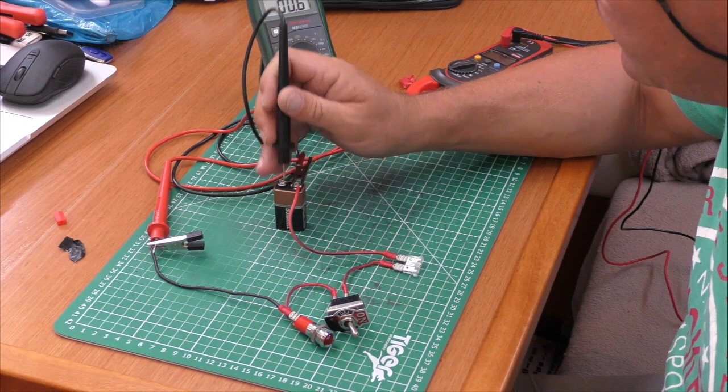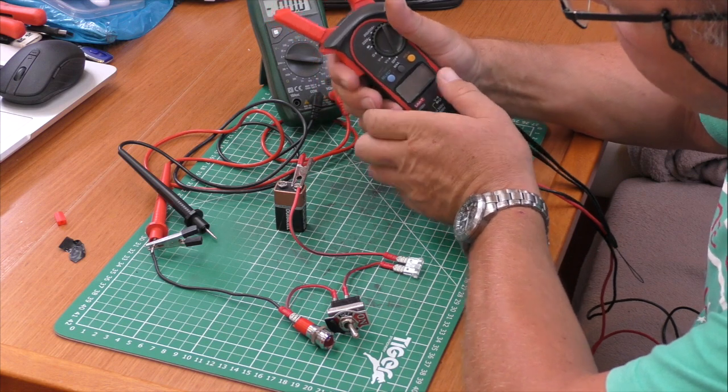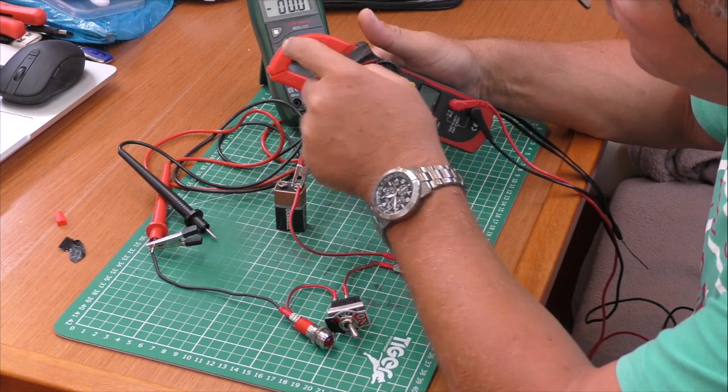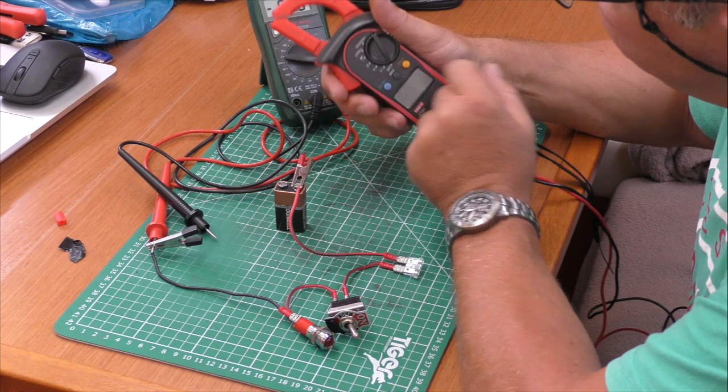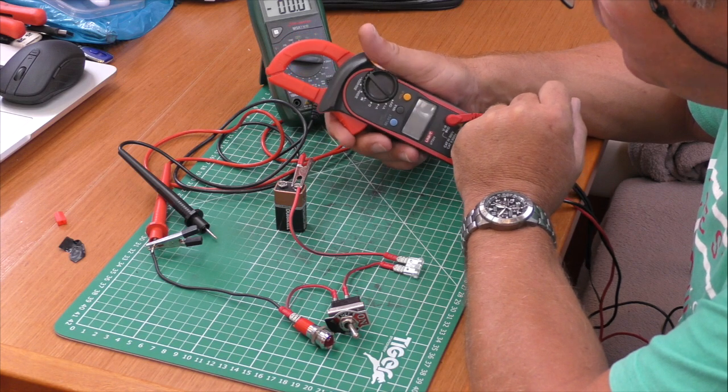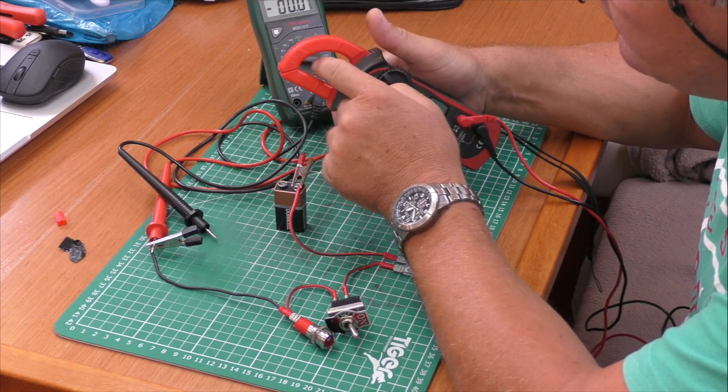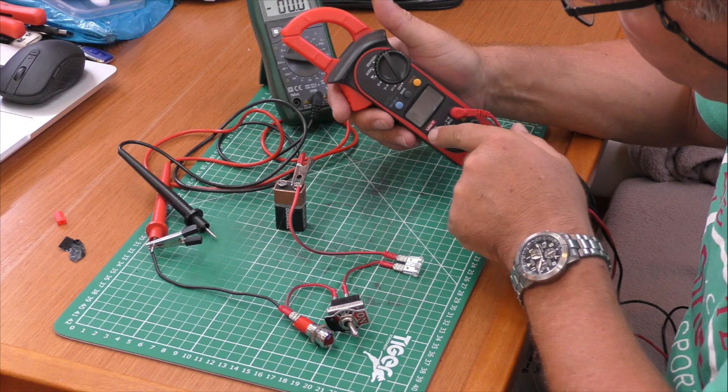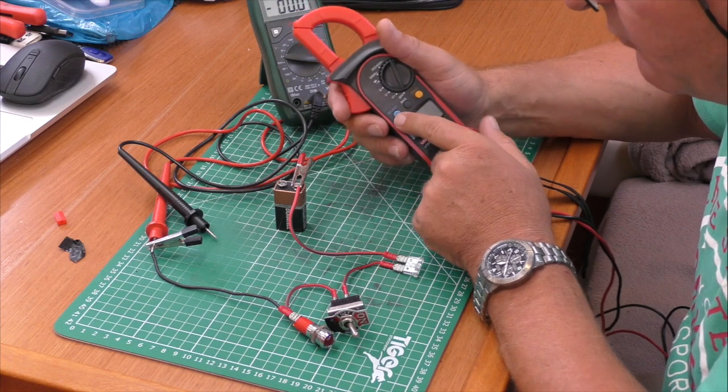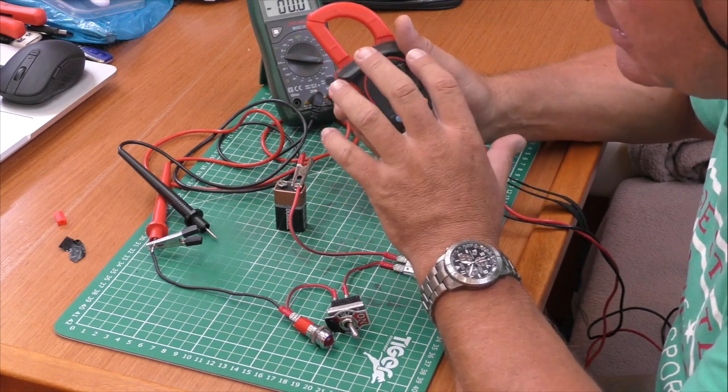Now the exception to this is when you use one of these clamp meters. With a clamp meter it works by induction. Remember we talked about how cables have magnetism running in them when they're live. This is an AC clamp meter but you can buy DC clamp meters and they work in the same way. They're not part of the circuit. The electromagnetic induction induces a current in a coil and that current is measured on the scale here. I believe that's a much safer way of measuring current rather than putting your meters into a circuit.